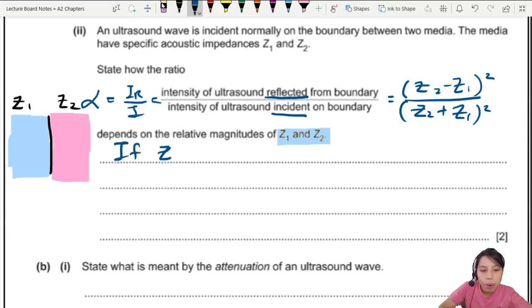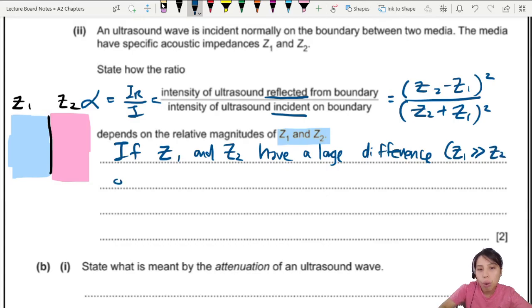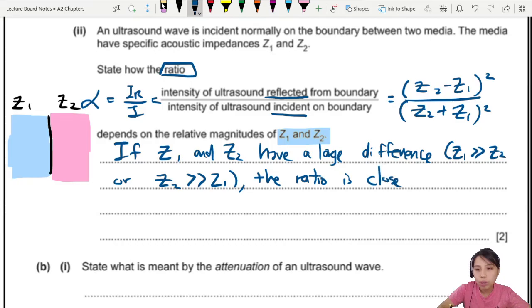So we can say that, firstly, if Z1 and Z2 have a large difference. Sometimes you may see mark scheme write this as Z1 much greater than Z2 or Z2 much greater than Z1. That's ways you can talk about the mathematical way to write the difference. So if they have a large difference, what happens? The ratio is close to 1. So what the 1 means is that there will be large reflected intensity.